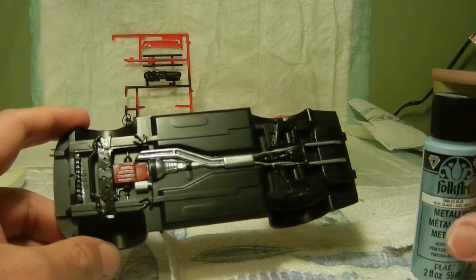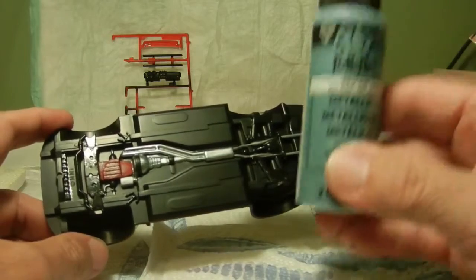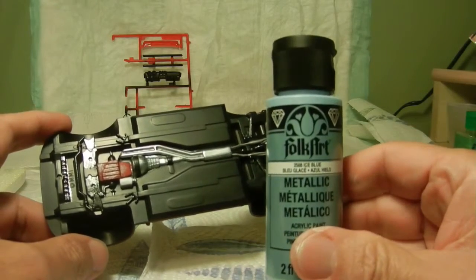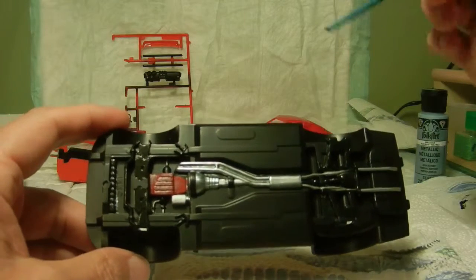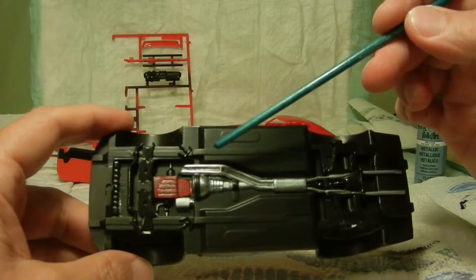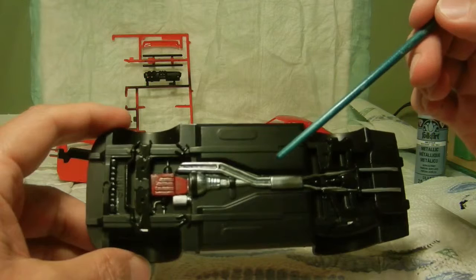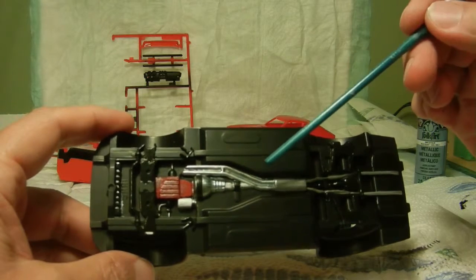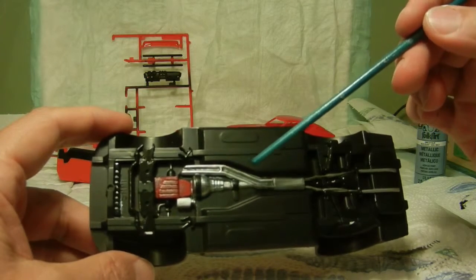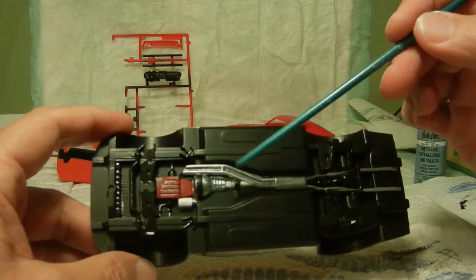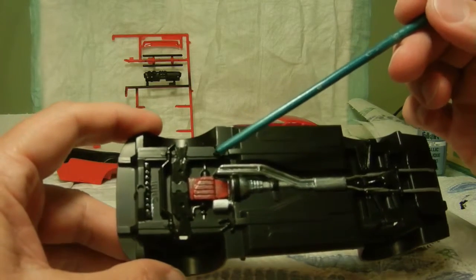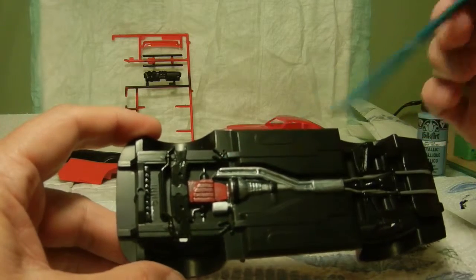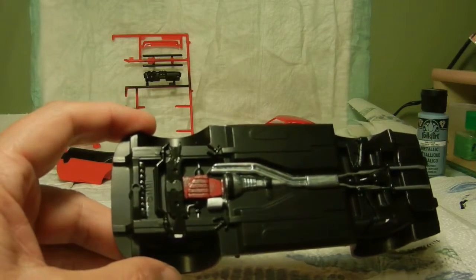That's all the FolkArt metallic silver as well as the transmission. I also, just to kind of highlight a little bit, I used some of the FolkArt ice blue and I basically dry brushed it right over the muffler and the exhaust pipes just to give a hint of that little blue color.